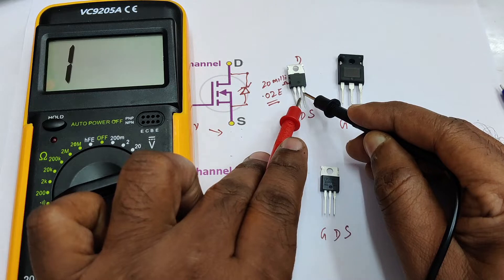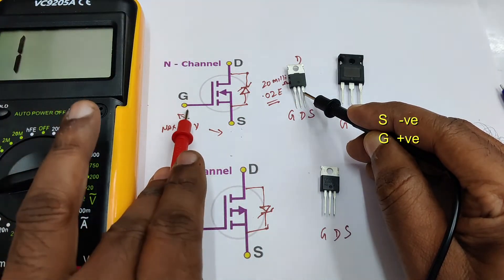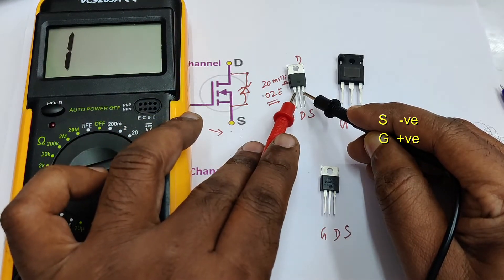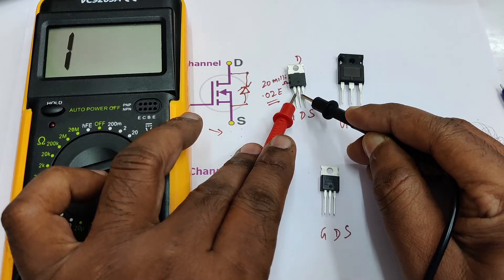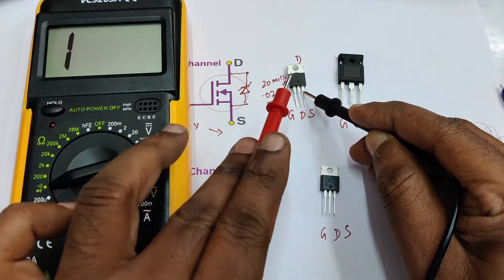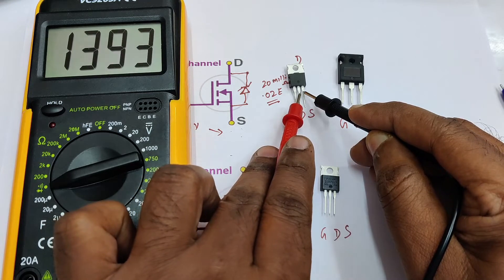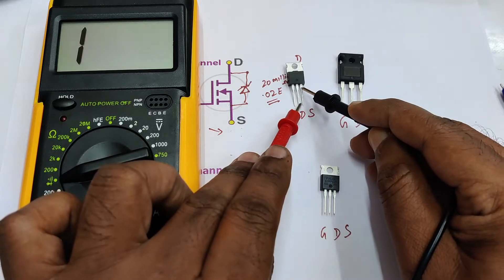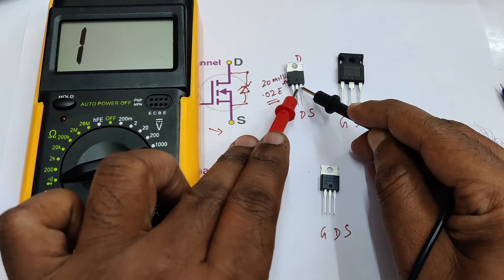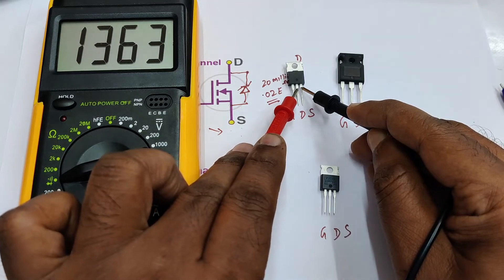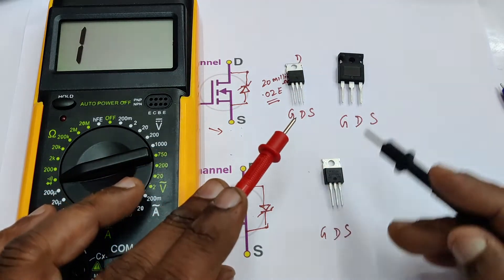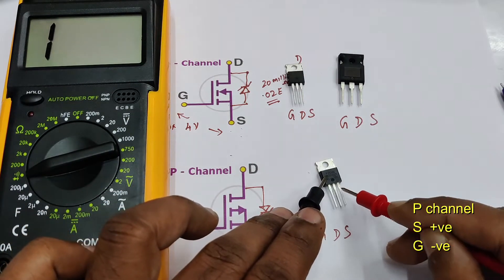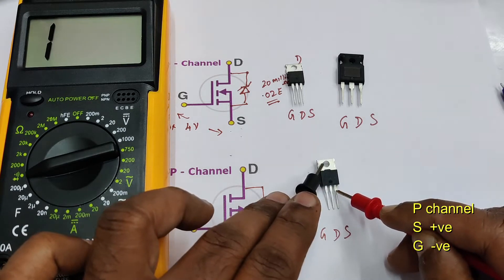Keep the negative probe at source — with respect to negative at source, the drain will show no resistance. Now trigger the gate: place the positive probe at the gate. In the diode range, approximately 3.3V will be applied at the gate. Now the MOSFET is conducting. Check the resistance between drain and source — it is varying because there is capacitance between gate and source. It is conducting and then going to OFF state as the capacitance charges.